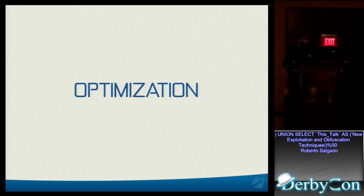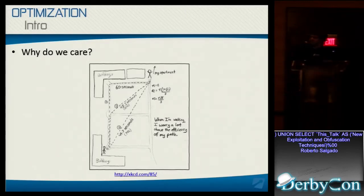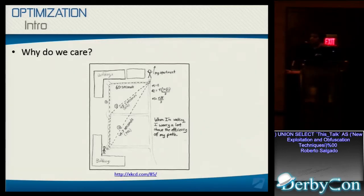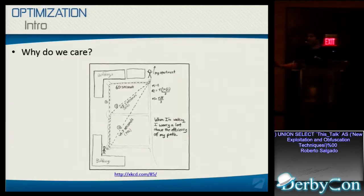So, optimization. Why do we really care about optimizing our queries? There are a few reasons: it will save bandwidth, use less resources, and less network congestion. But for me the most important reason is we get faster results. It's not unheard of that someone's attacking a database and the firewall picks up the alerts and blocks the injection right away. So with a lot of these optimization techniques, we can use them to get all the database information in just a few seconds without triggering enough alerts to give the team time to block you.